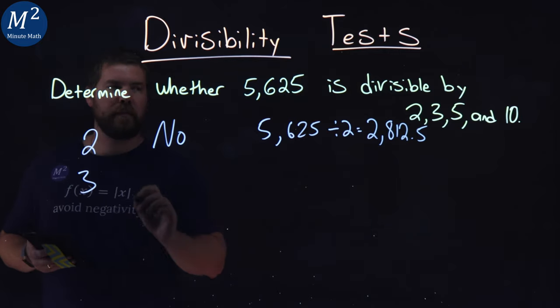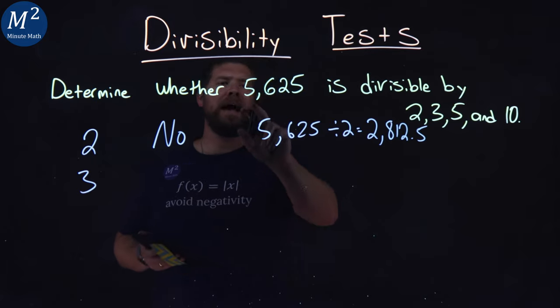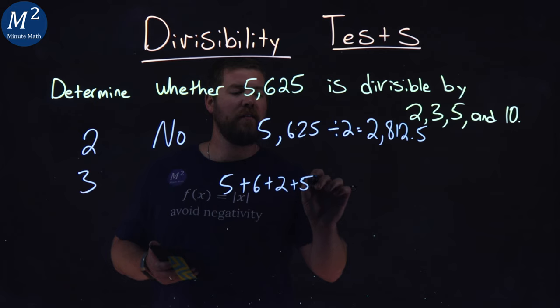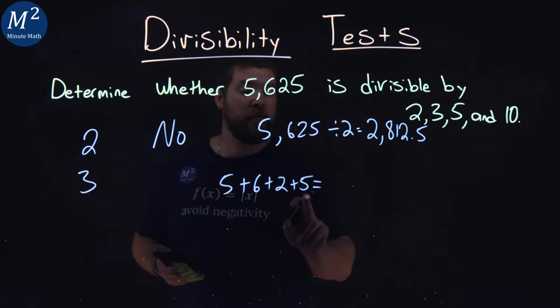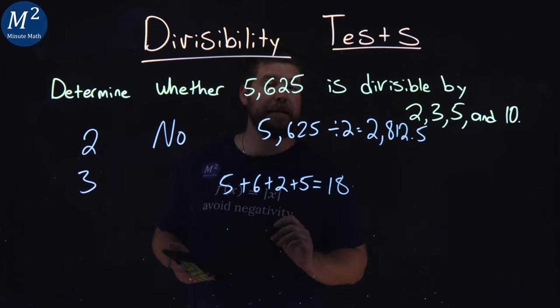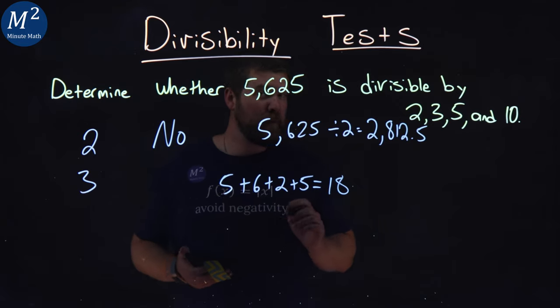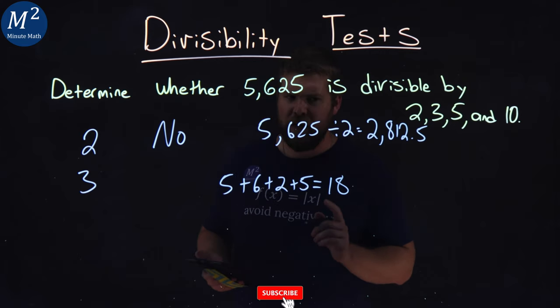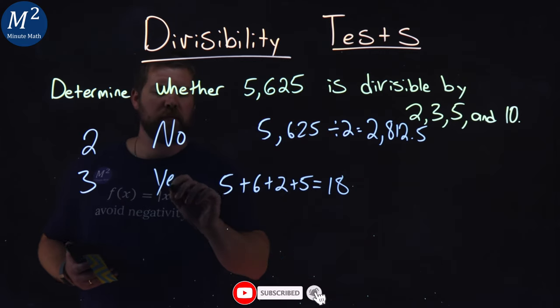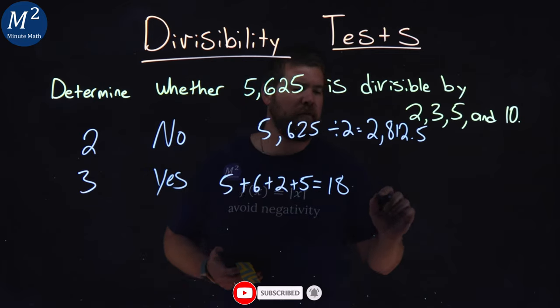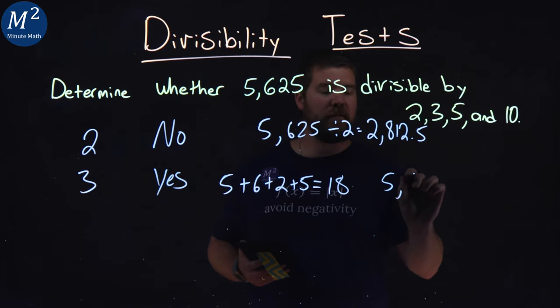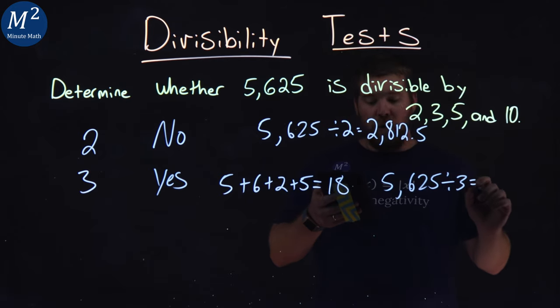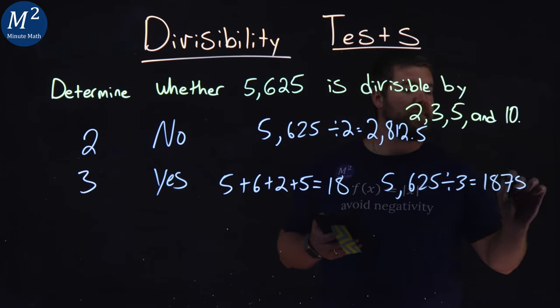What about 3? The trick for 3 is to add up each one of these digits. 5 plus 6 plus 2 plus 5, what does that equal? Well, 5 plus 5 is 10, 6 and 2 is 8. We're at 18. Is 18 divisible by 3? Yes, it is. 3 times 6 is 18. So if that's true, then yes. Our number 5,625 is divisible by 3. 5,625 divided by 3 is equal to 1,875.